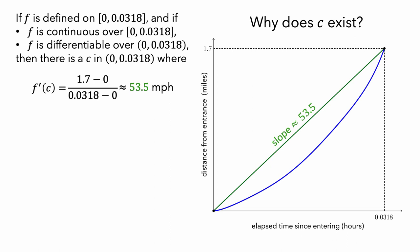Let's compare the speed of the blue car with that of the green car. The blue car's speed at a given moment in time can be represented by the slope of a line tangent to the blue curve at that time. Let's start with a tangent line at x-naught hours. The slope of this tangent line is f prime of x-naught. Let's let the value of x-naught increase, and as we do this, let's watch the slope of the tangent line.